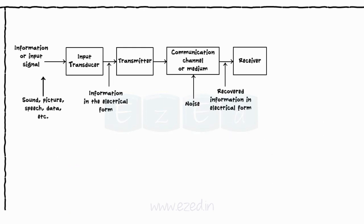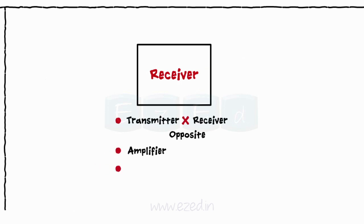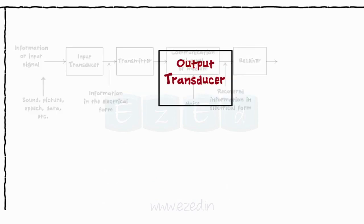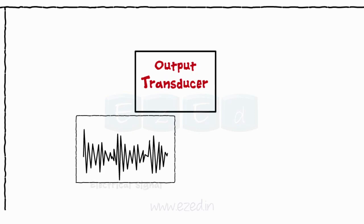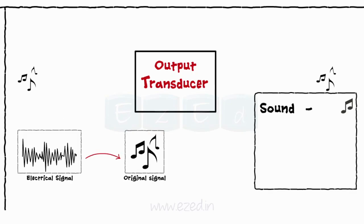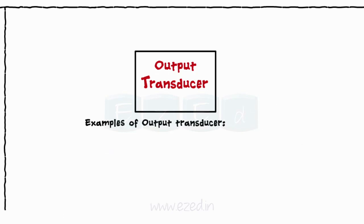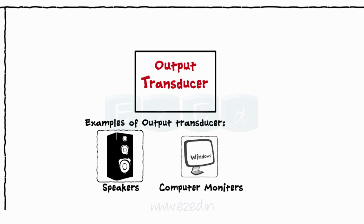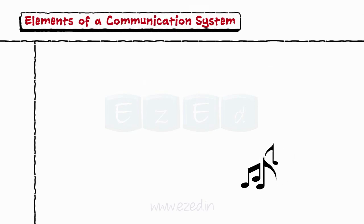The fifth stage is the receiver. The operation of a receiver is exactly opposite to the transmitter. Receiver block contains different circuits such as an amplifier, demodulator, detector, mixer, etc. The next stage is an output transducer. The output transducer converts the received electrical signal to its original form, i.e. sound, picture, video, data, etc. The examples of output transducer are speakers, computer monitor, etc. The last stage is the output where we receive the signal in its original form.